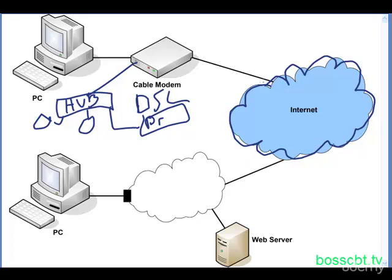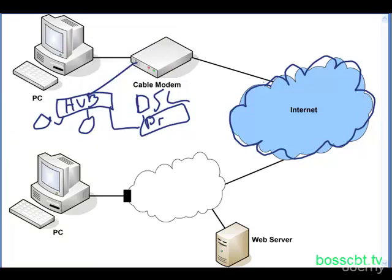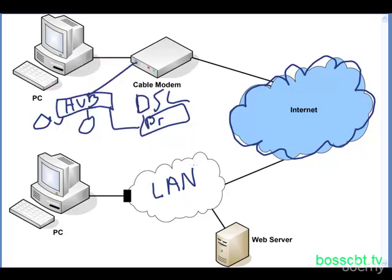The purpose of the Enterprise Network is very similar to the SOHO Network: to enable communication between employees and grant them access to resources — remote resources, online somewhere in the cloud, at a remote office, or locally, like a web server shown in this diagram. The LAN cloud here represents the local area network, which contains many more components — routers, switches, firewalls, and perhaps other resources — all represented by that cloud.